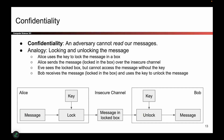One way to achieve confidentiality using a physical analogy is to take the message, put it in a box, and lock it. In the symmetric key model, Alice and Bob share a key that nobody else has — it's a secret key, and the only two copies belong to Alice and Bob. So Alice takes her message, puts it in a box, and uses a lock operation with the key to secure it.